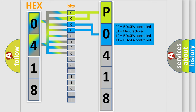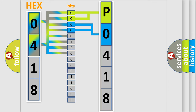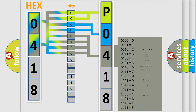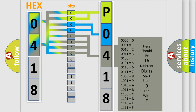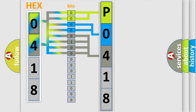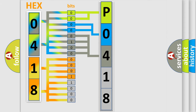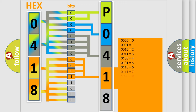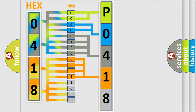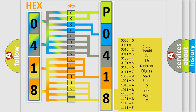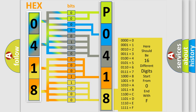The last bits of the first byte define the third character of the code. The second byte is composed of a combination of eight bits. The first four bits determine the fourth character of the code, and the combination of the last four bits defines the fifth character. A single byte conceals 256 possible combinations.